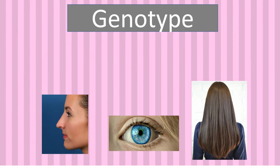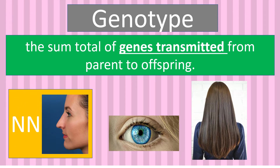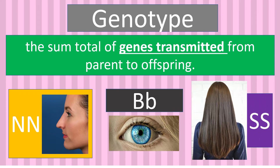A genotype is an organism's complete set of heritable genes, or genes that can be passed down from parents to offspring. Genes are primarily represented by a pair of letters. For examples, capital NN is the genotype of a person with a pointed nose; capital B, small b, is the genotype of a person with blue eyes; while capital SS is the genotype of a person with straight hair.